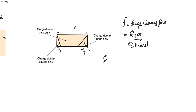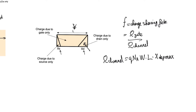The total depletion charge in the channel, Q_channel, equals the concentration of depletion charge — which is q times N_a, since the body is P-type — multiplied by the volume of the channel, W times L times X_dep_max. This is the total volume of the cuboid of the channel, where L and X_dep_max give the cross-sectional area and W is the width dimension, representing the total depletion charge in the channel.